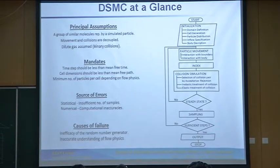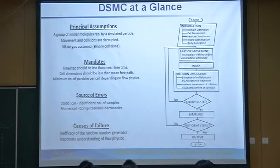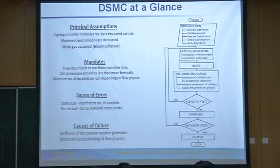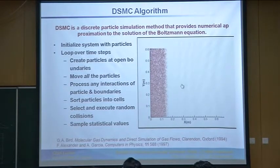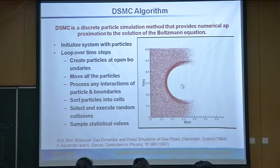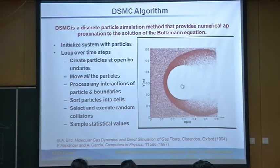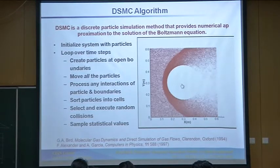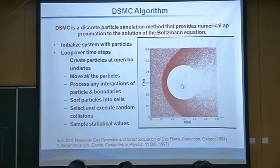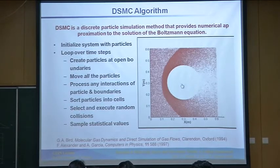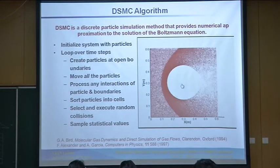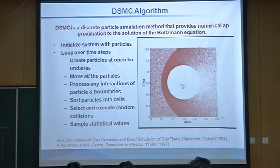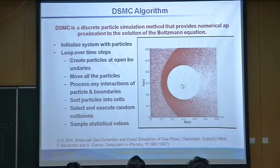The algorithm is straightforward: initialize, move the particle, index them by giving each an ID, do the collisions, and then sample the particles to get macroscopic properties — but only when steady state is reached. For a steady state problem, you must first let the flow field establish itself before sampling. If you collect data before steady state, you introduce another source of error.